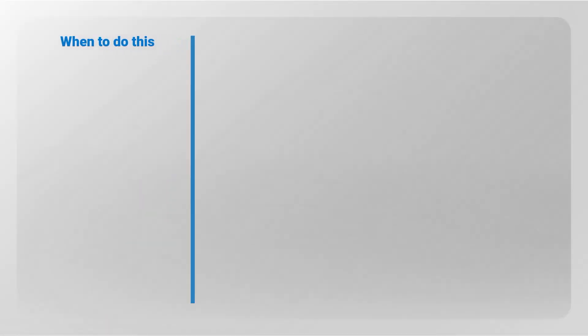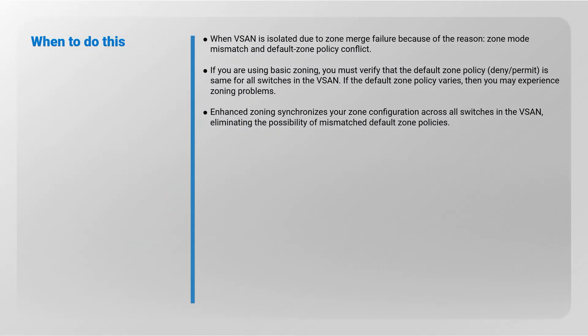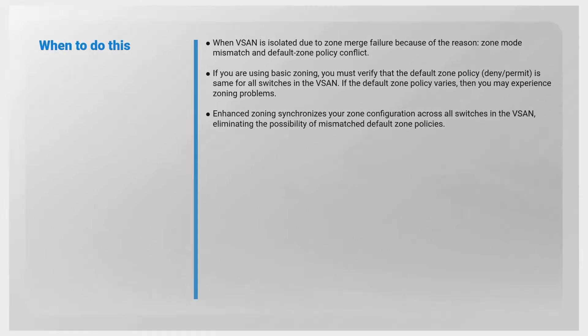When to do this: when VSAN is isolated due to zone merge failure because of zone mode mismatch and default zone policy conflict. If you are using basic zoning, you must verify that the default zone policy — deny or permit — is the same for all switches in the VSAN. If the default zone policy varies, you may experience zoning problems. Enhanced zoning synchronizes your zone configuration across all switches in the VSAN, eliminating the possibility of mismatched default zone policies. Before you begin: